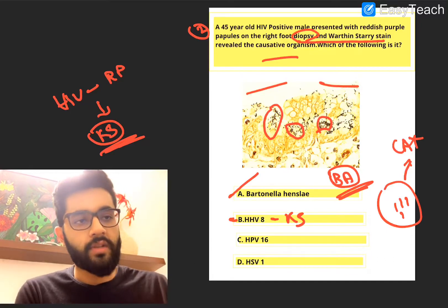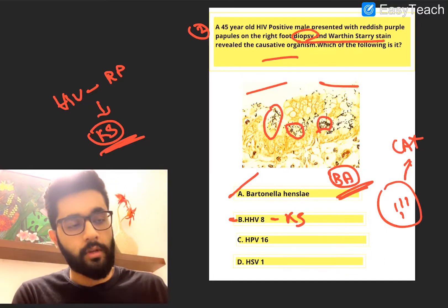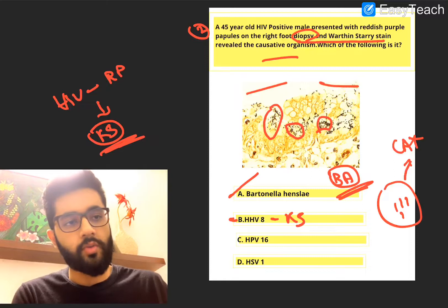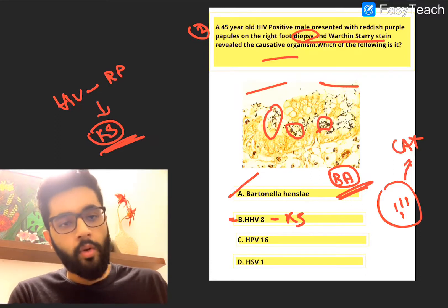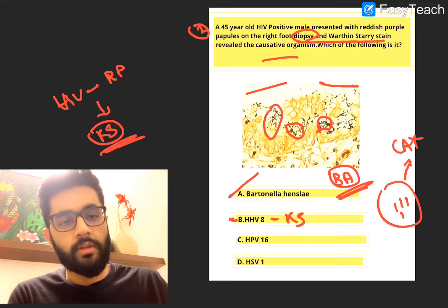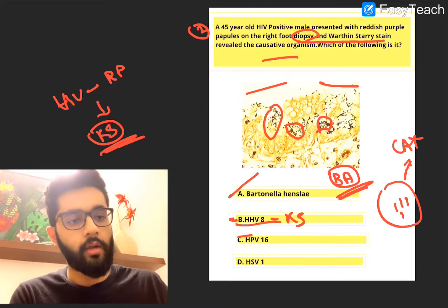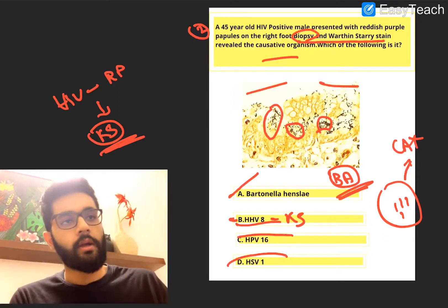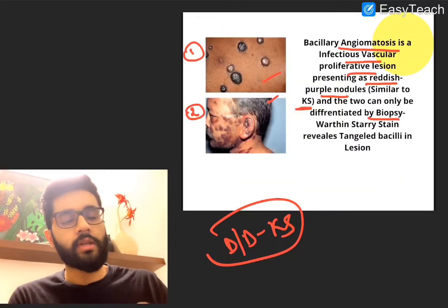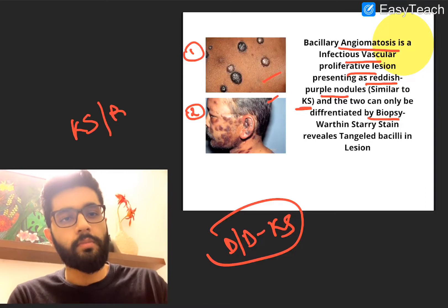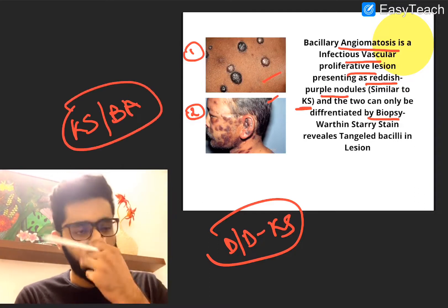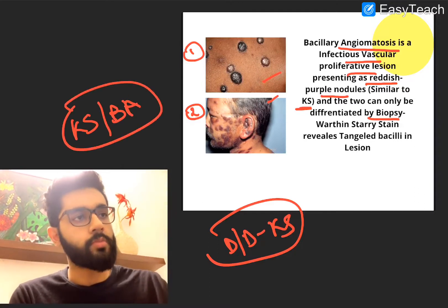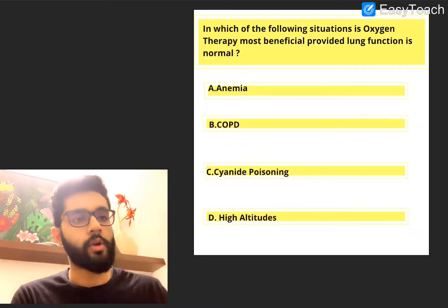None of these viruses can be seen on microscopy. Even if you didn't know what Bartonella was, you can see organisms on this microscopy and the rest of the options were viruses, so they were anyway ruled out. Remember: Kaposi sarcoma and bacillary angiomatosis present in a very similar manner, and you should make sure you're choosing the right one while solving.